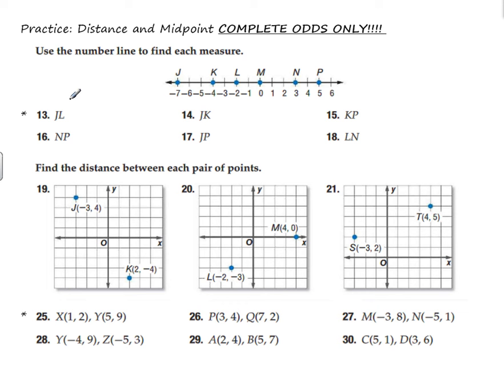Number 13, use the number line to find each measure. So remember our formula here is the absolute value of x minus x.